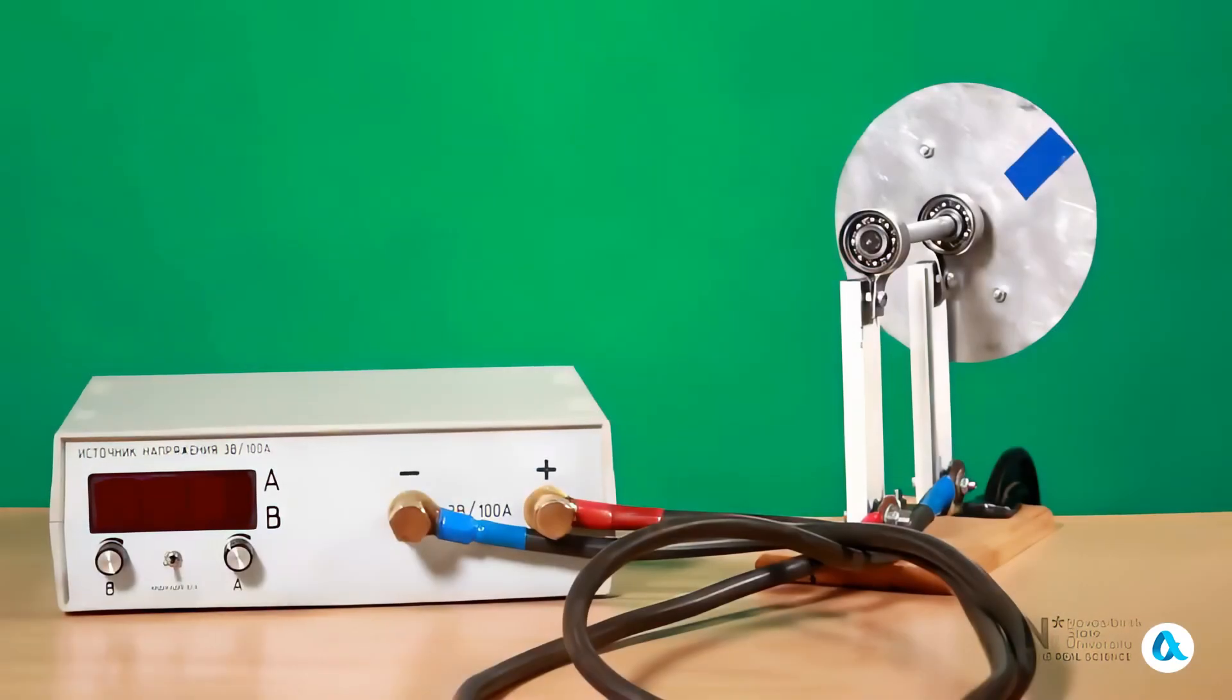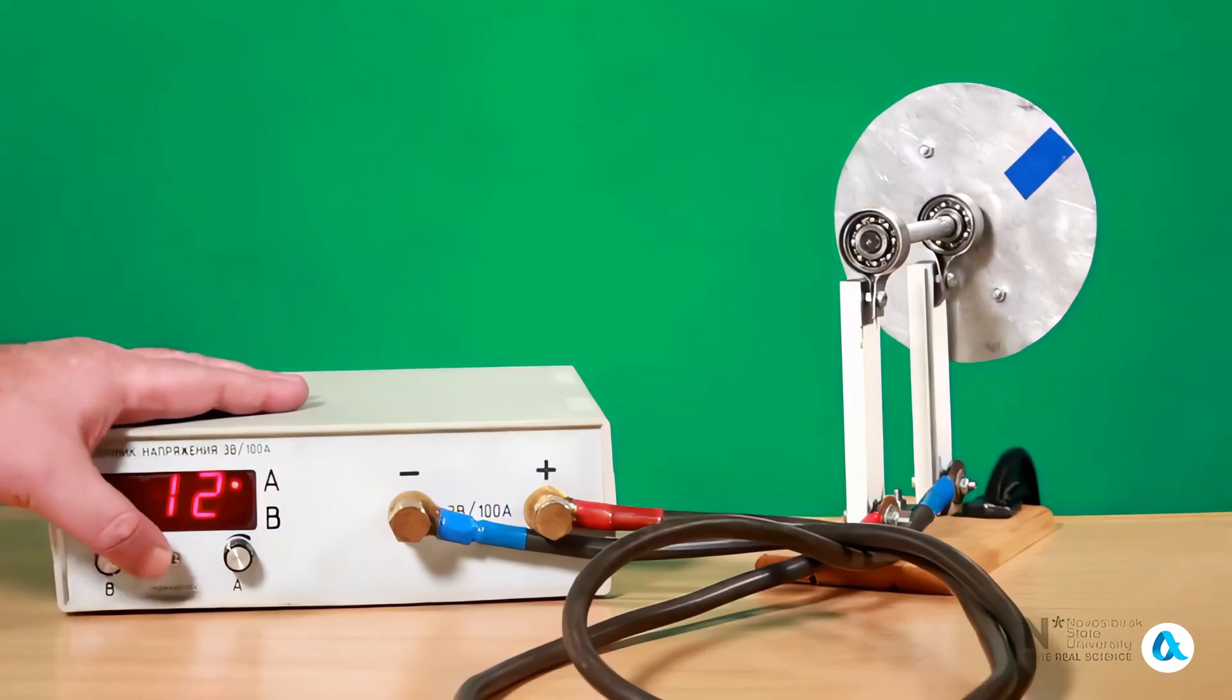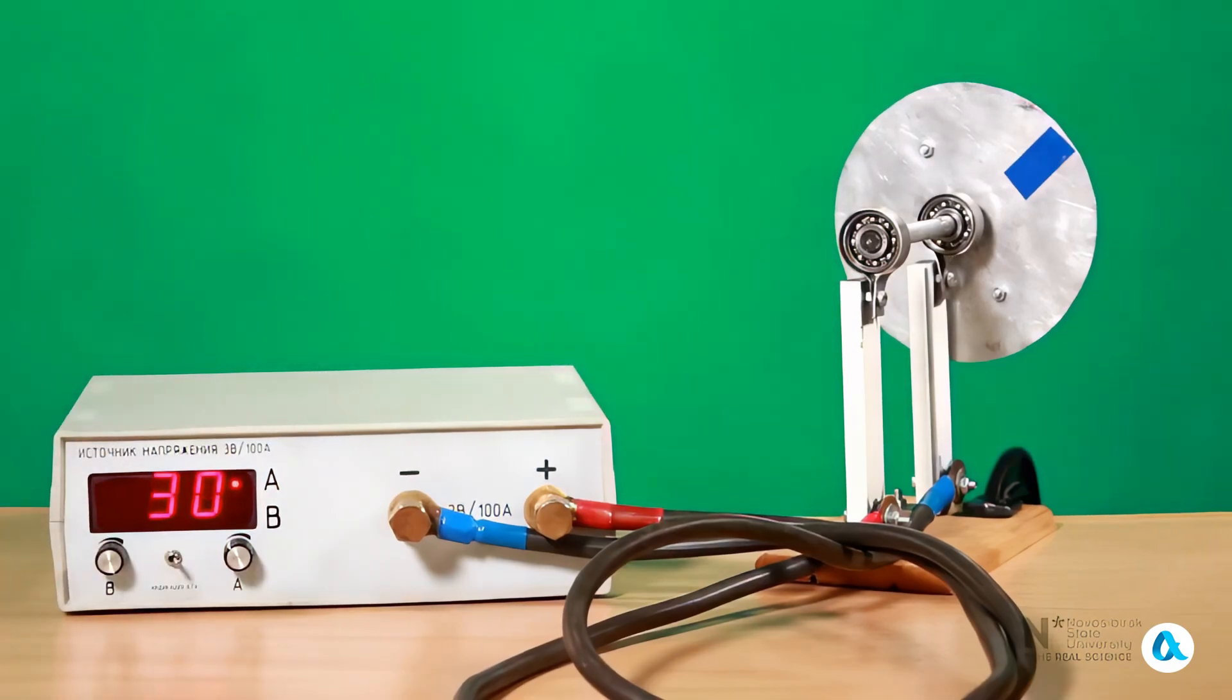Now let's take a look at how this motor operates. I turn on the power source. The voltage is just over one volt. But since the resistance of such a circuit is very low, the motor is now drawing as much as 30 amperes of current.